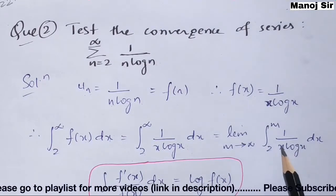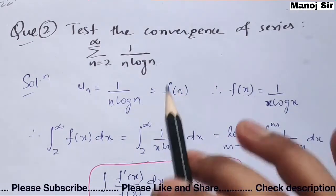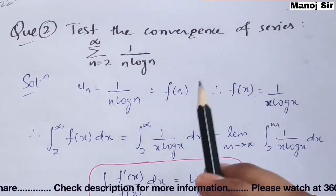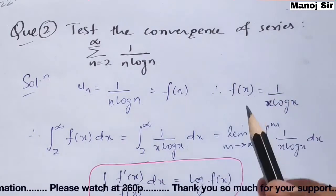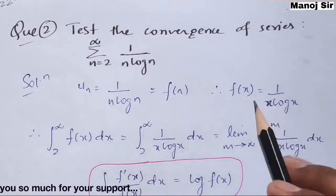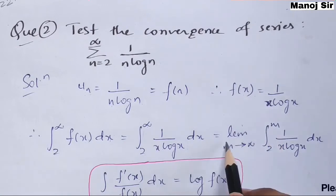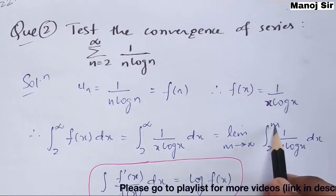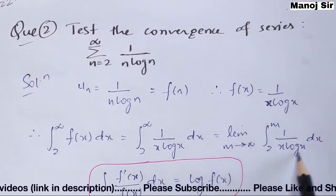As I mentioned in the previous video, while solving any problem on Cauchy's Integral Test we need to take the help of a limit. Because of this infinity in the upper bound, we replace infinity with m and write: limit as m tends to infinity of the integration from 2 to m of 1 upon x·log x dx.